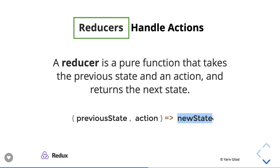To summarize, we covered three different principles: the Redux store manages a single source of truth as a single JSON object; state is read-only; and updates happen through reducer functions, which are pure functions that return a new state. These are the three different principles of Redux. That's it — let's connect in the next video.